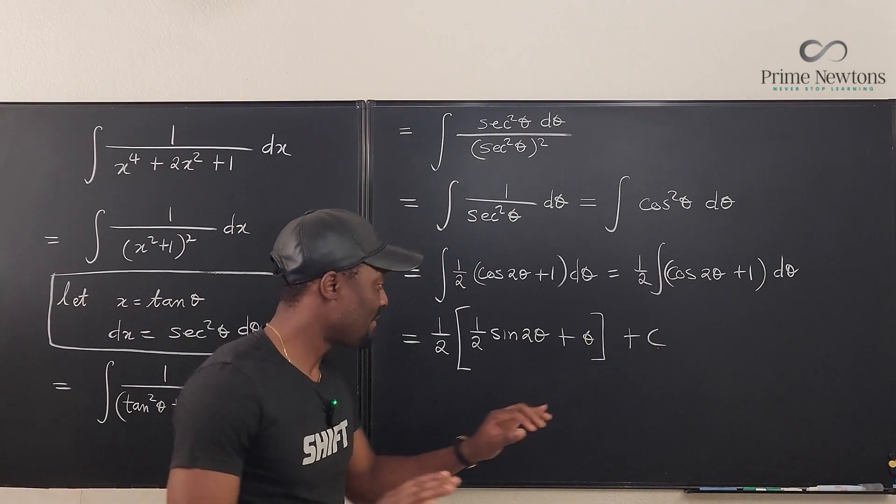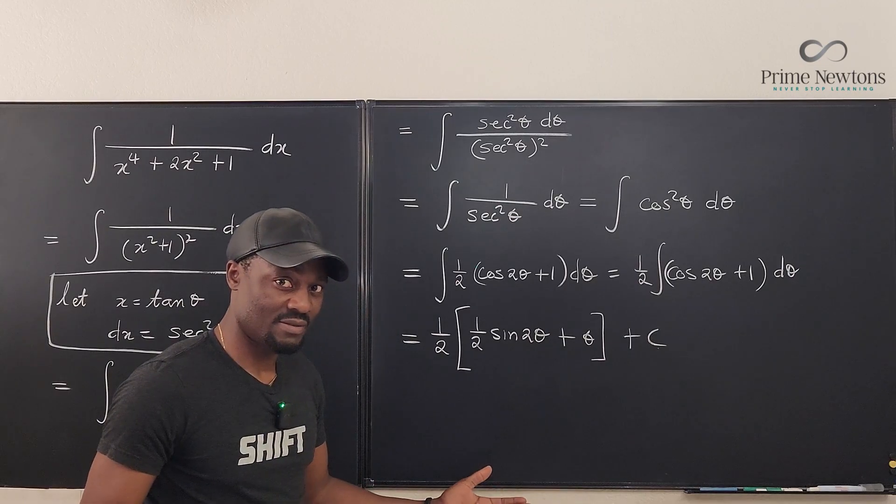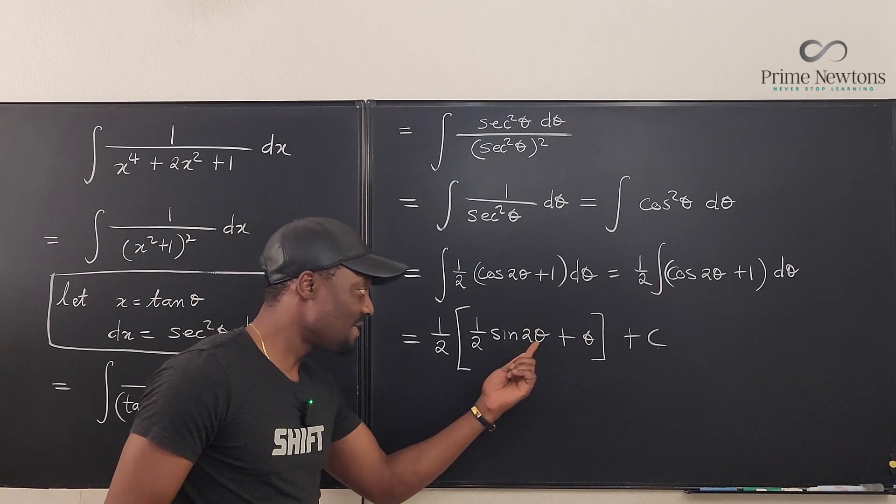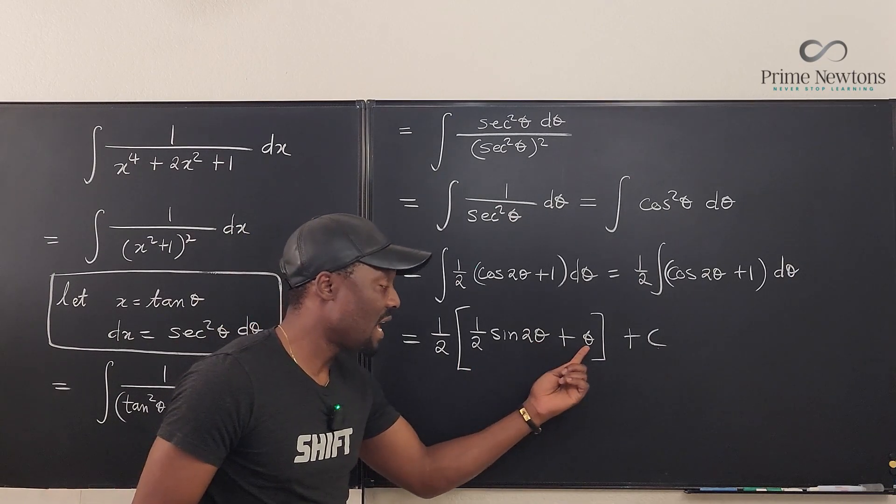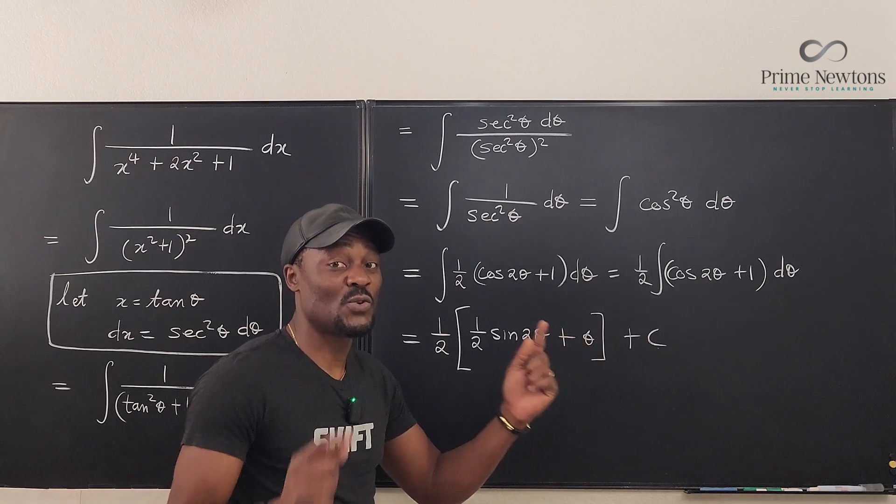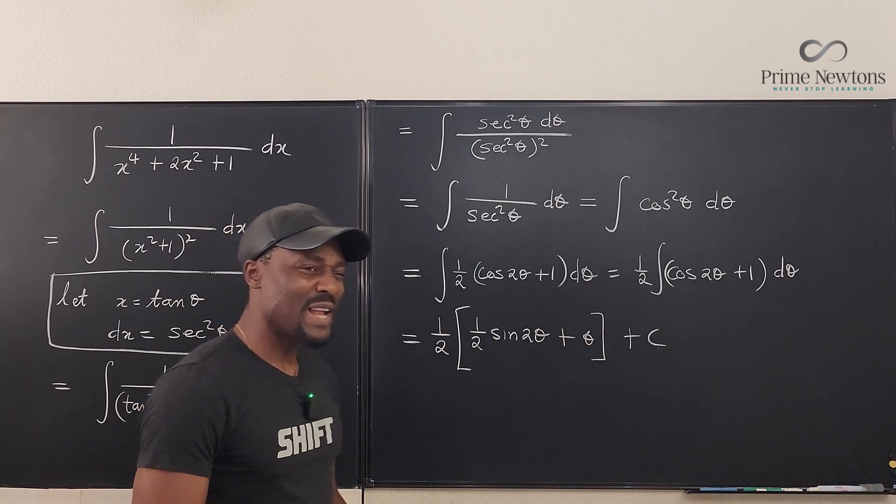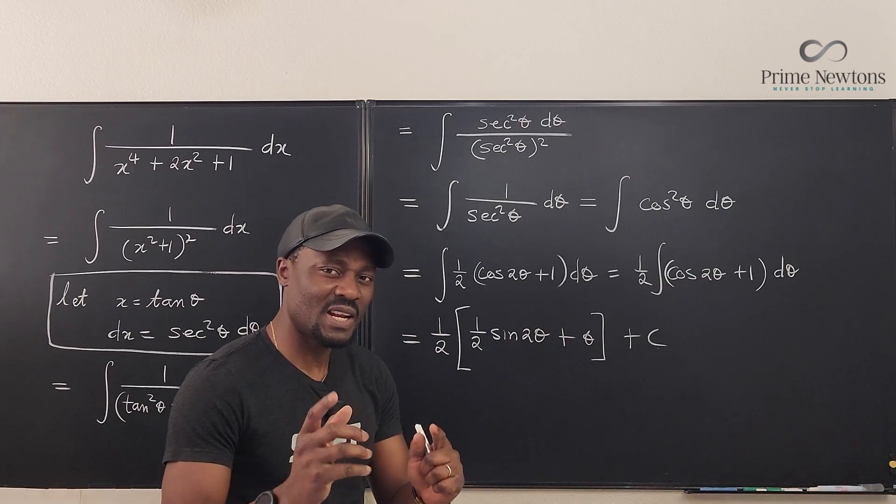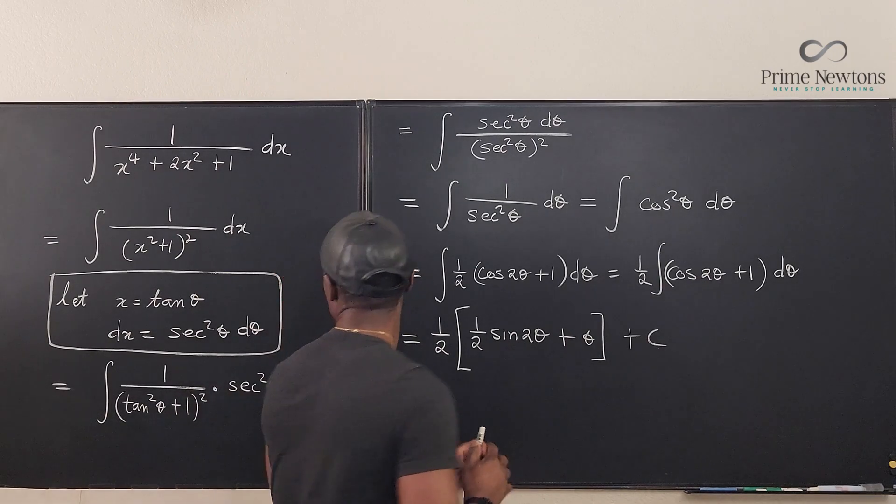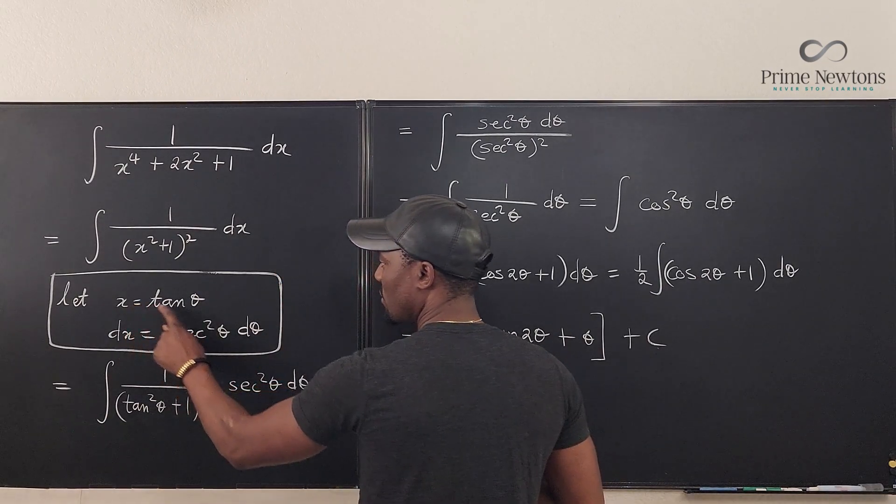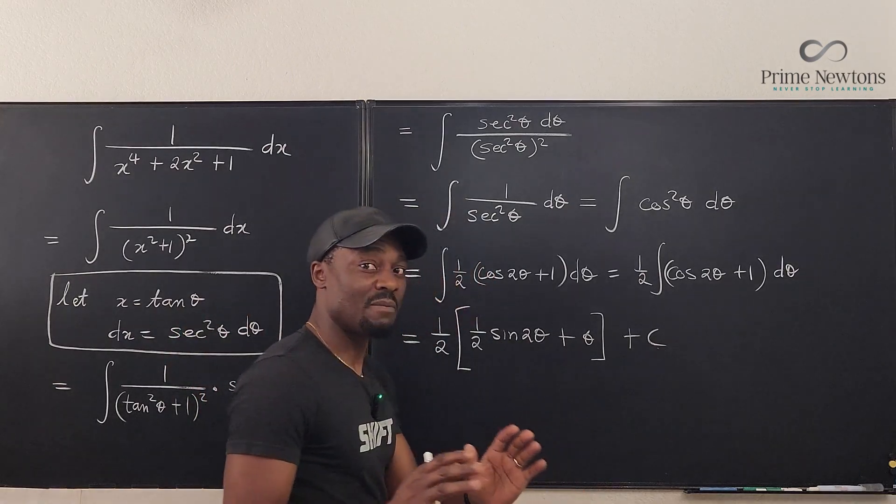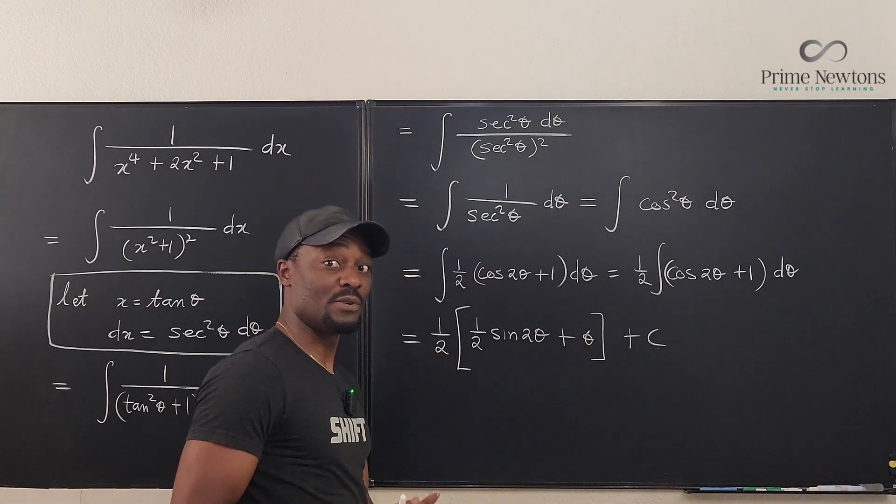At this point we have obtained our answer, but we cannot leave it in terms of theta. We have to go back to x. So when did we switch from x to theta? That's the next place you go to. It was here. We said x equals tan θ. So we have to go back and make a triangle so we can recover our x.